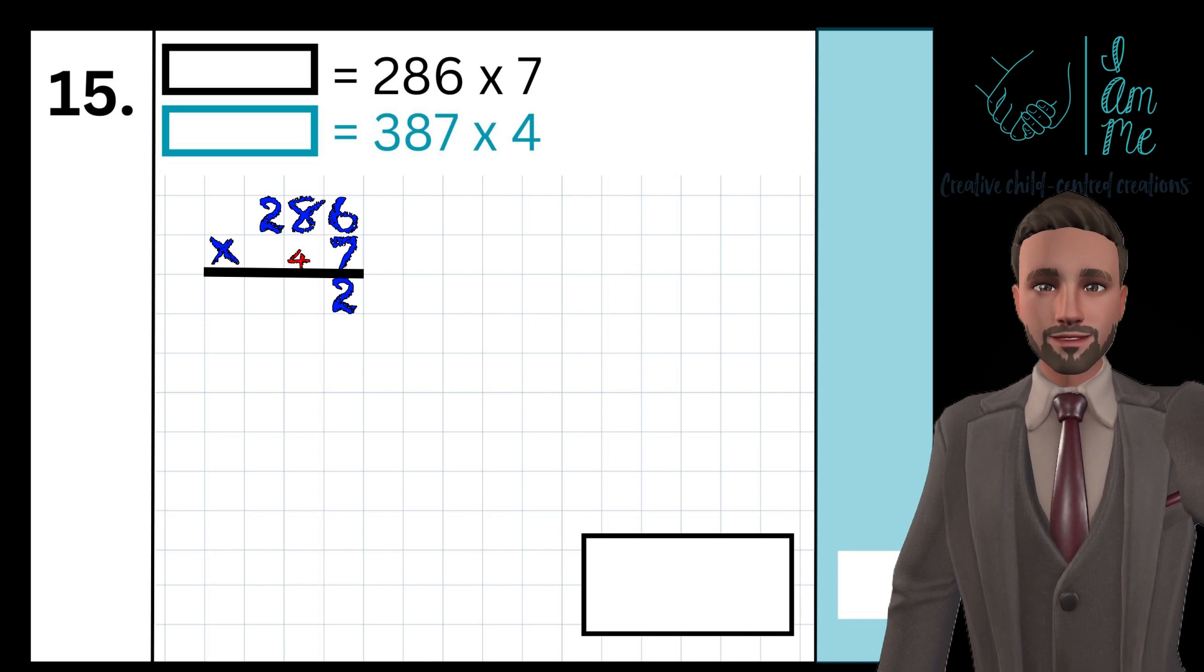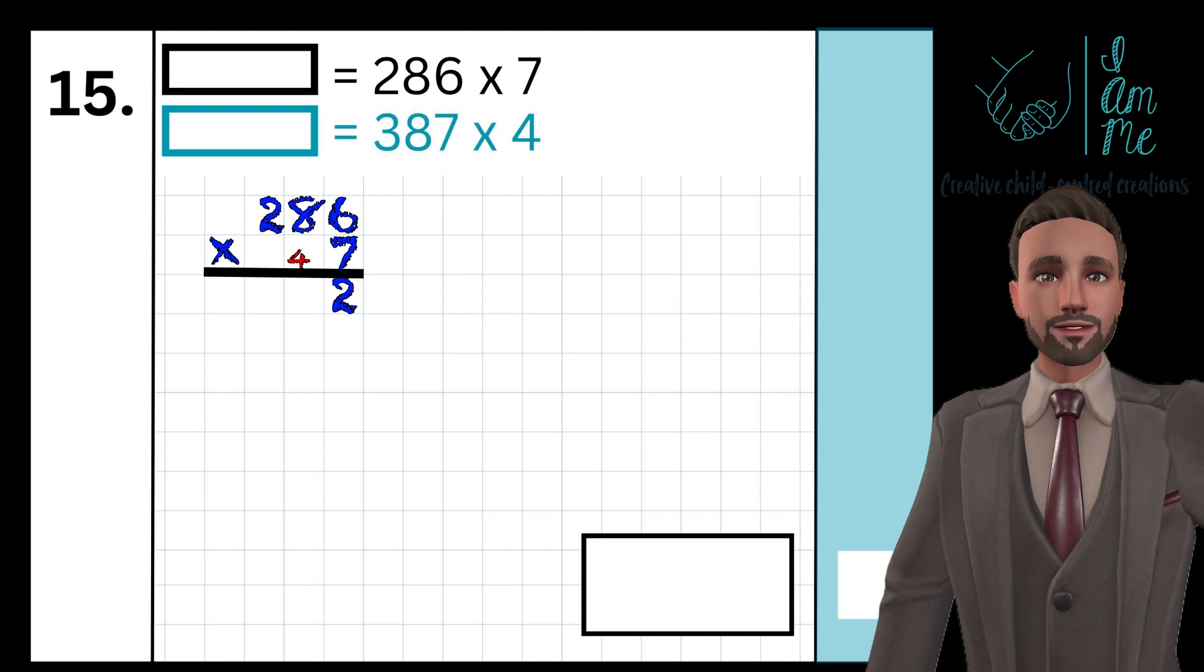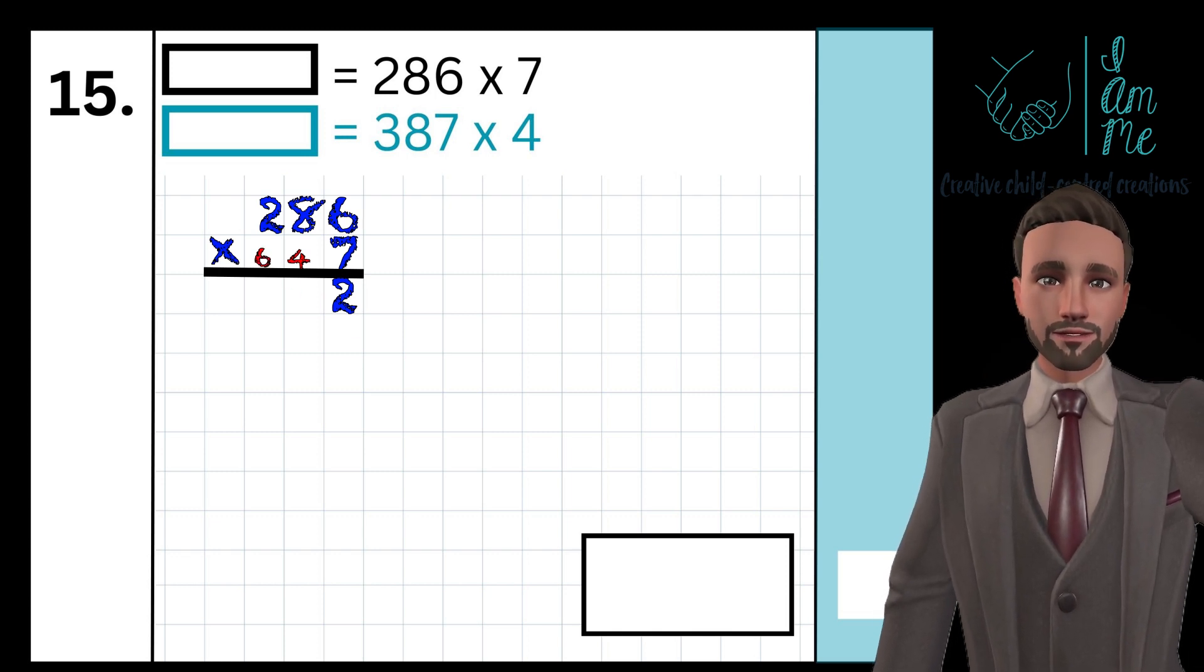8 multiplied by 7 is 56. Add what I previously carried: 56 add 4 is 60. I carry the 6 and place the 0 beneath the line.